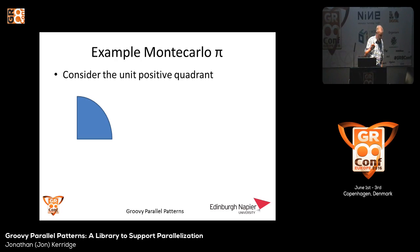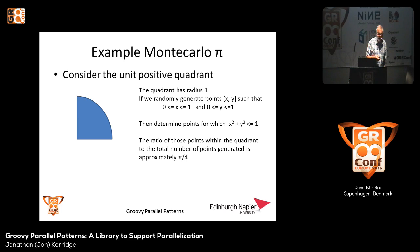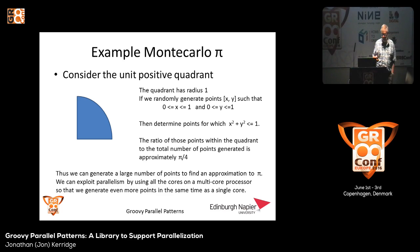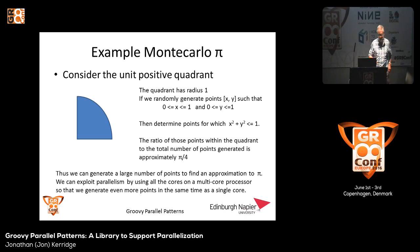Simple example: Monte Carlo Pi. Unit positive quadrant — if we have a quadrant of radius one and calculate random points x and y such that x and y are less than or equal to one, then if x squared plus y squared is less than or equal to one, the point is within the quadrant. The ratio of those points within the quadrant is approximately pi by four. Have enough points and you'll get a more accurate pi. We can generate large numbers of points and exploit parallelism by using all the cores on a multi-core processor, generating even more points in the same time as a single core.